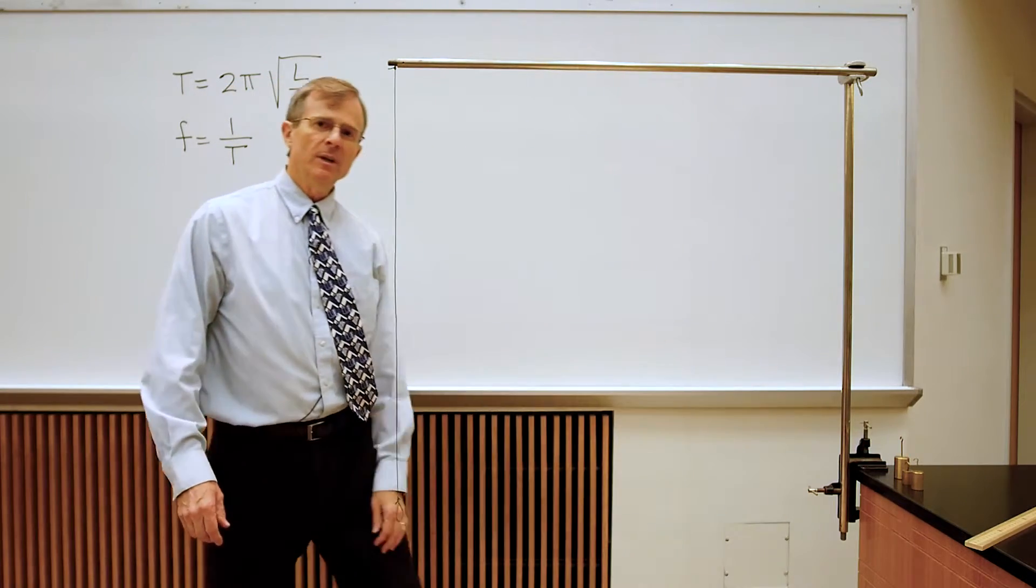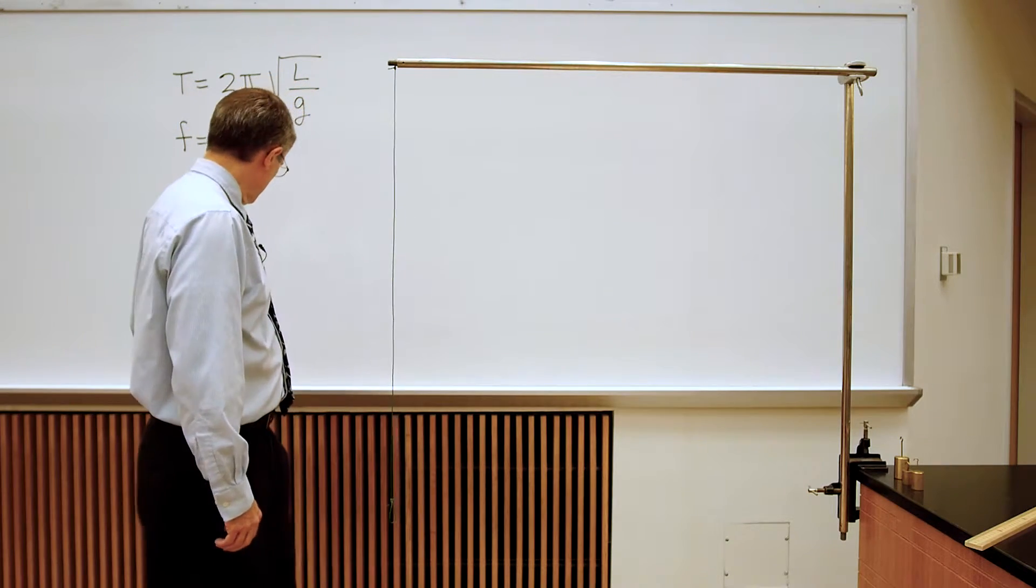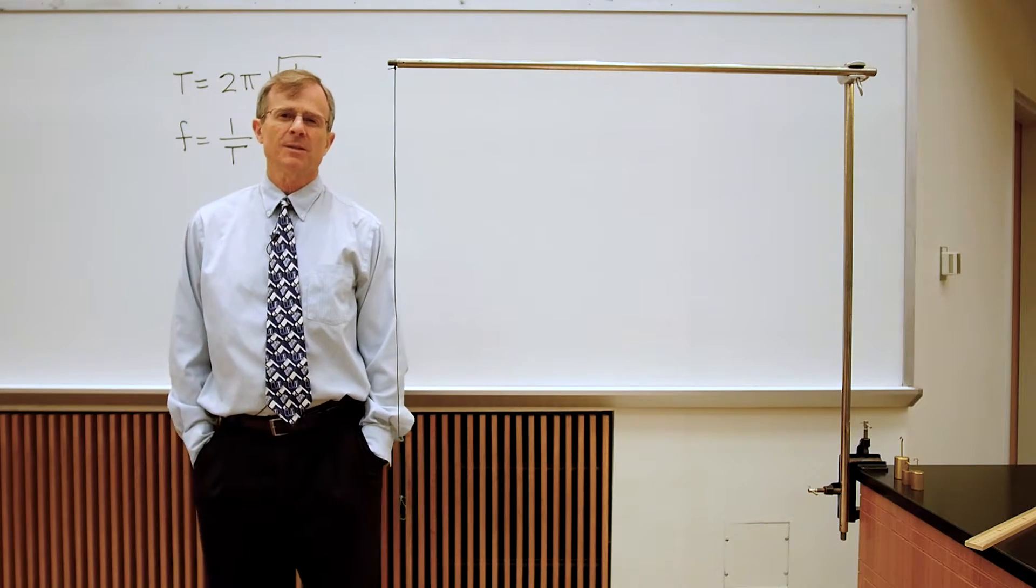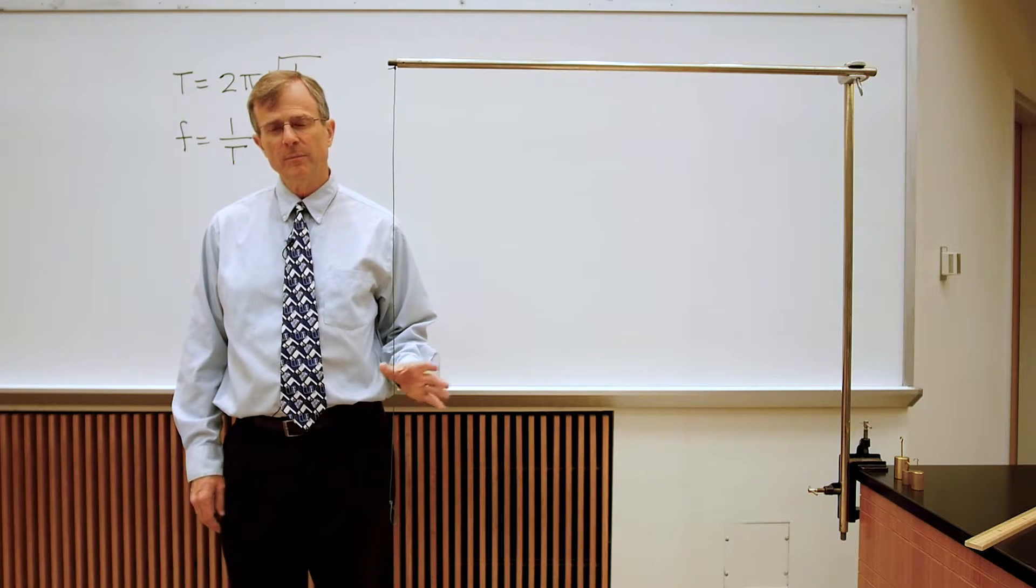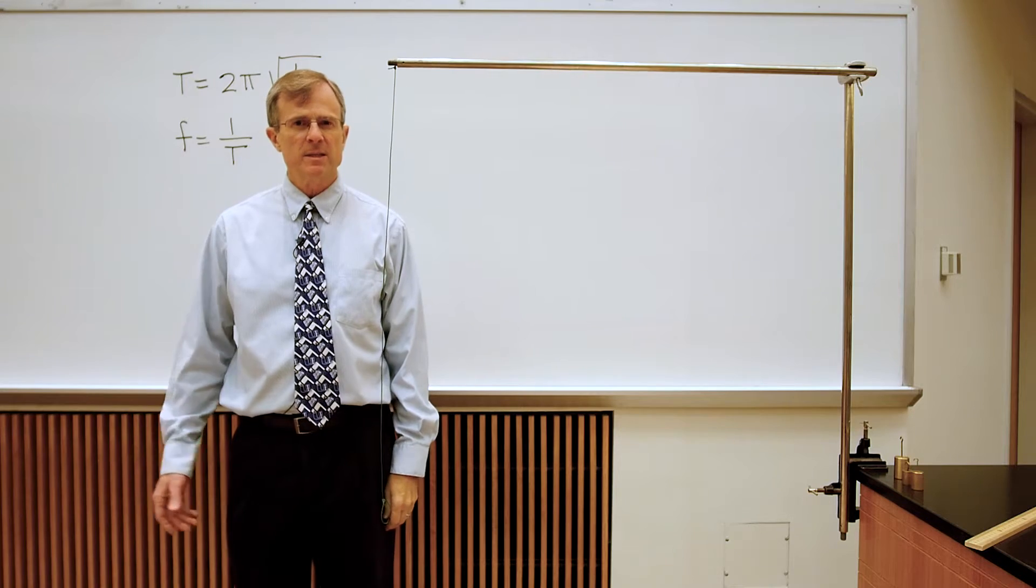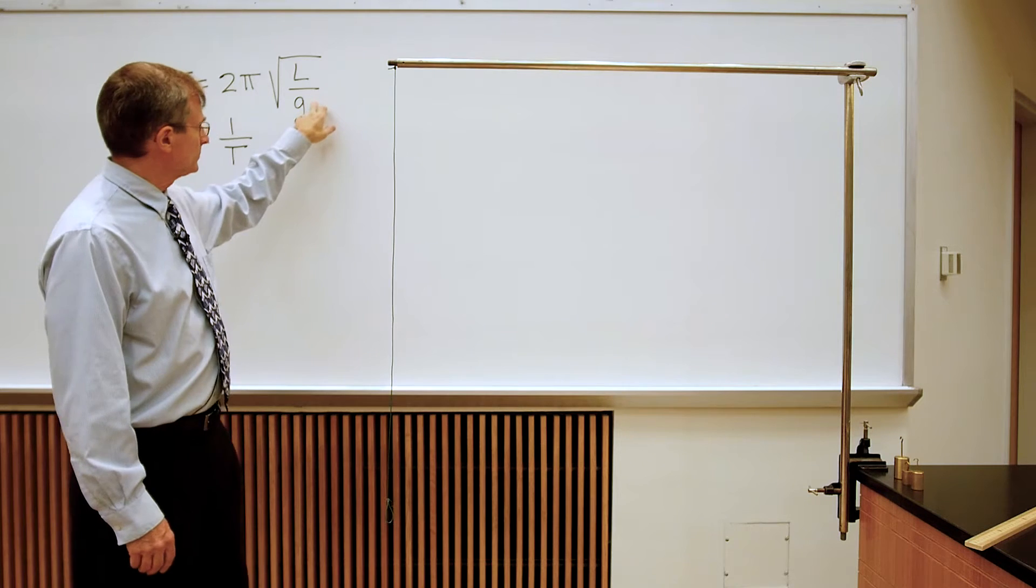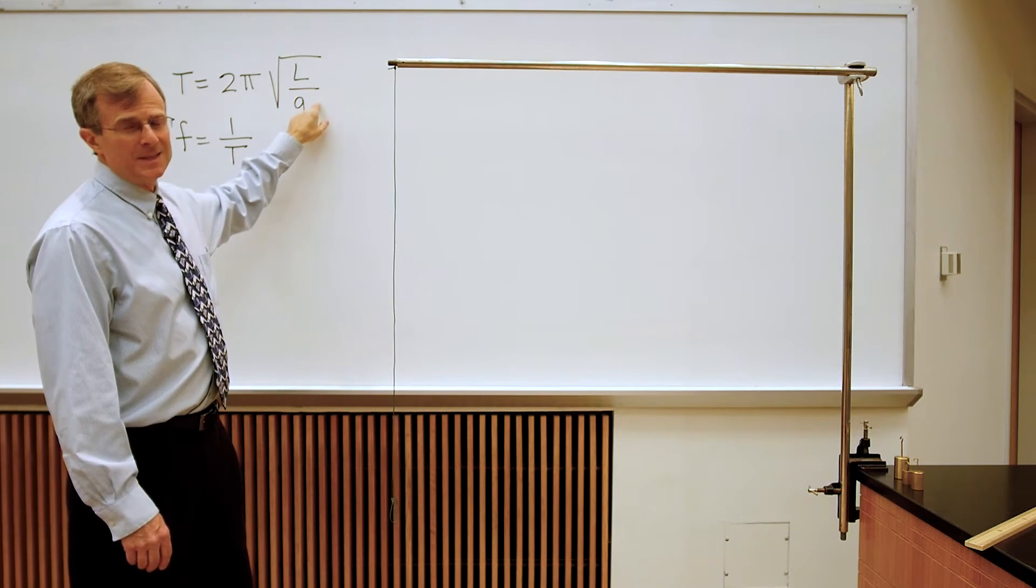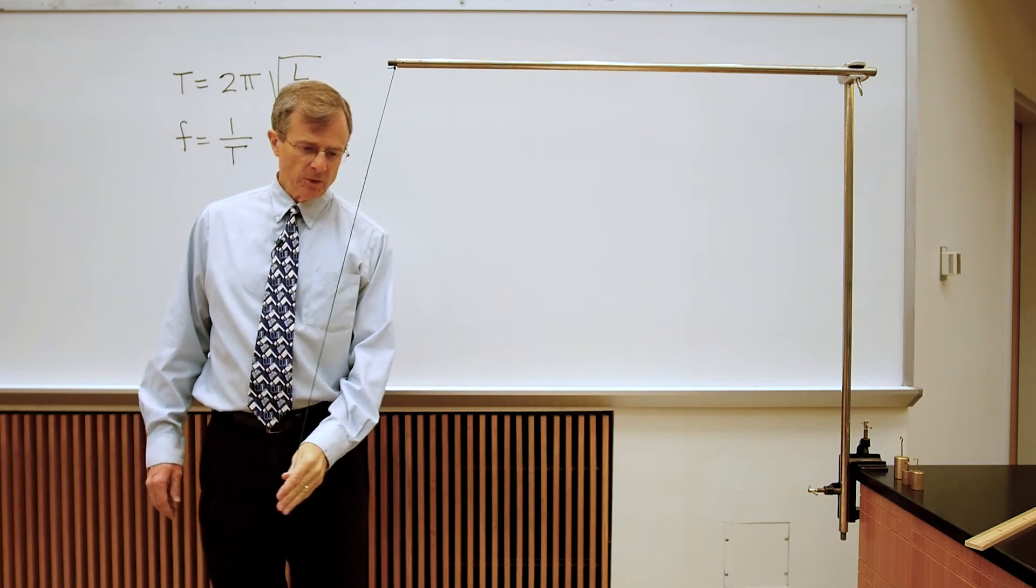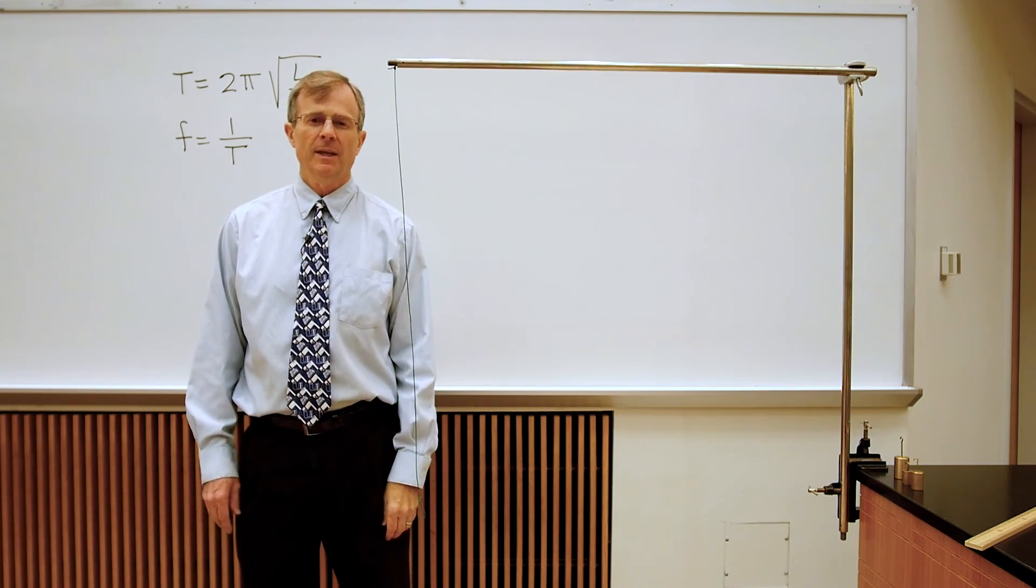And then the other thing that the period depends upon, of course, is gravitational acceleration. The Earth's gravity is 9.8 meters per second squared. If you were to take this pendulum and set it up exactly like this on the Moon, where gravity is much less than it is on the Earth, you'd have a smaller gravitational acceleration. And given that that's in the denominator, you'd have a longer period. So it would take longer time to make an oscillation with the same length that it would on Earth.